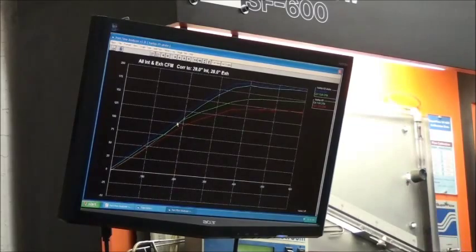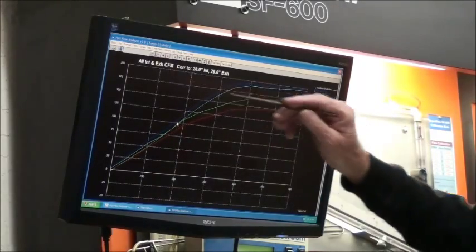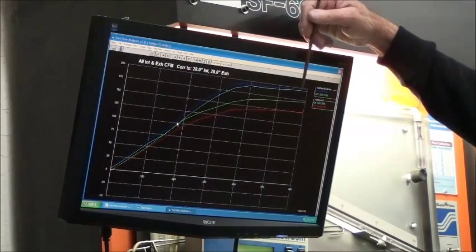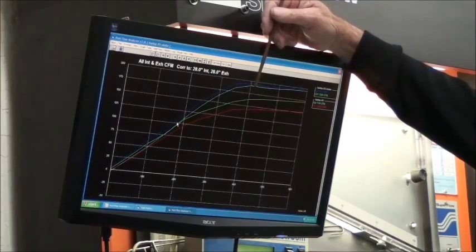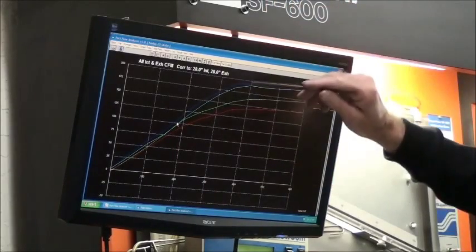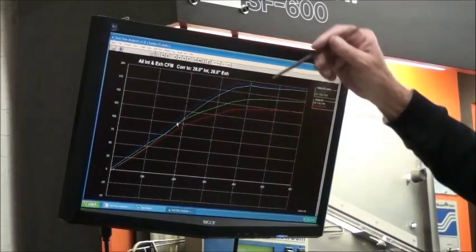So you can see right out of the gate, we can get some pretty good airflow. And if you notice on the stock head, see how this line right here stayed pretty flat? That's what you call port stalling, where the port just stalls out. After 400 lift, not much magic is happening there.